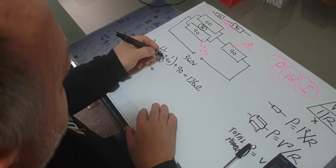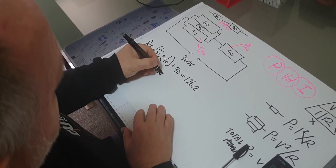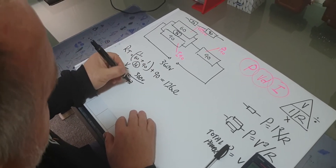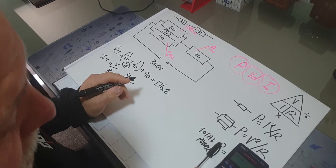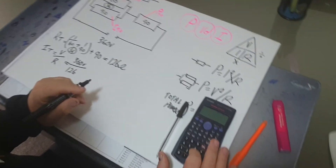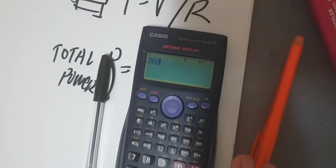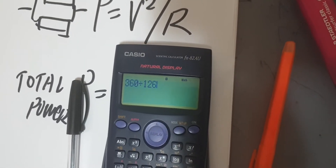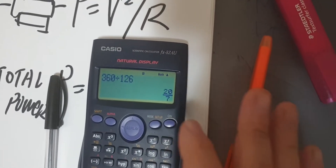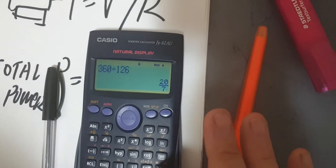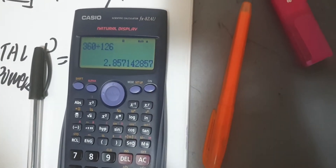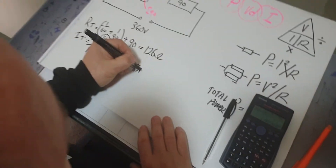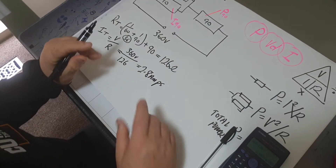Writing up the formula: I equals V divided by R total. Voltage is 360 volts divided by resistance total of 126. On the calculator: 360 divided by 126 gives us 2.8 amps.